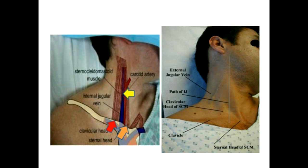Let us first identify the two heads of the sternocleidomastoid muscle, or simply sternomastoid. It has a medial head called the sternal head. The orange arrow on the bottom shows the sternal head getting inserted into the sternum. Next, the clavicular head of the sternomastoid is indicated by the red arrow shown at the bottom. You can see that it is positioned laterally.